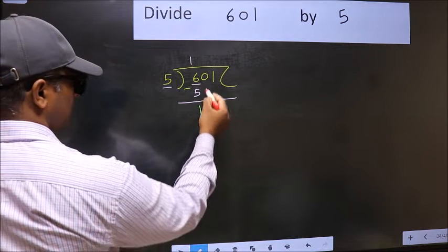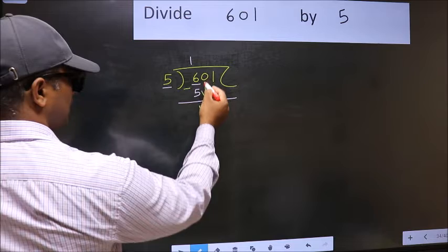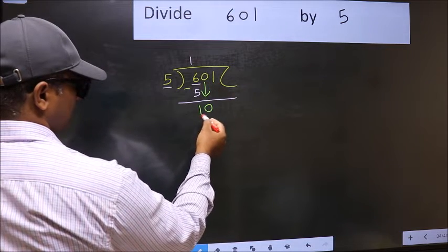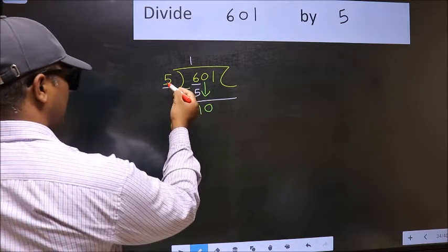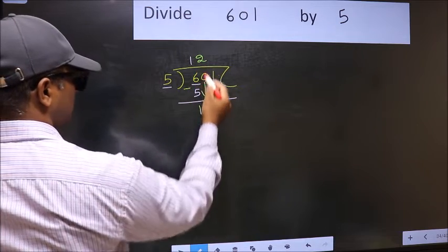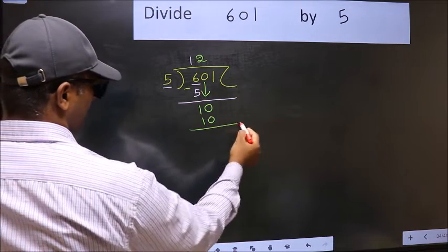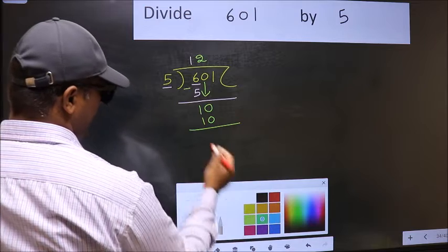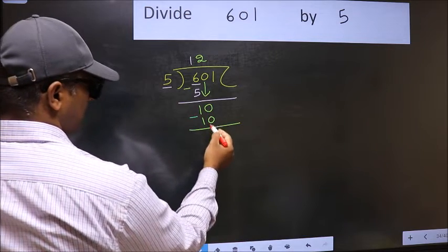After this, bring down the beside number. So 0 down. Now 10. When do we get 10 in 5 table? 5, 2s, 10. Now you should subtract. 10 minus 10, 0.